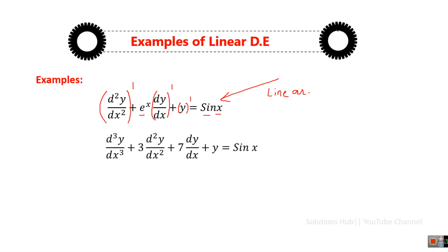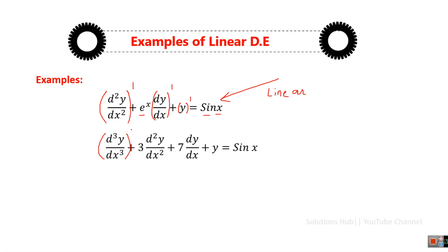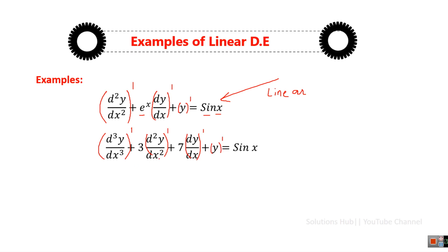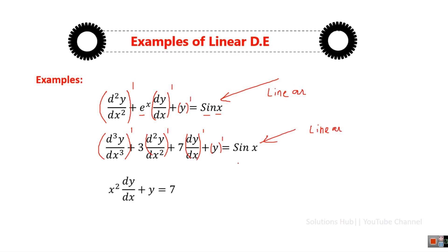In the second example, the highest derivative involved is the third derivative, so the order is 3 and its exponent is 1, giving a degree of 1. Every differential quotient of the dependent variable has exponent equal to 1, the dependent variable y has exponent 1, and there is no product of dependent variable and derivative. It follows all the points, so this is also a linear differential equation.